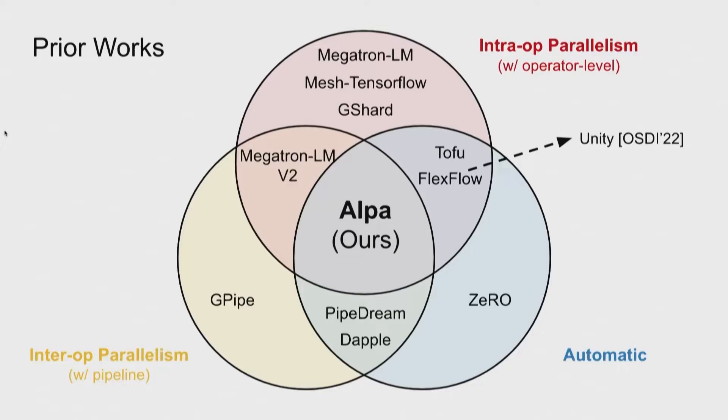In contrast, Alpa is the first system that can solve both types of parallelism automatically. Yesterday, you also heard of Unity. Unity is built on top of FlexFlow. Different from Unity, Alpa targets models that are much larger and makes auto-parallelization work for these large-scale models. Next, I will let Zhihao tell you more about Alpa.